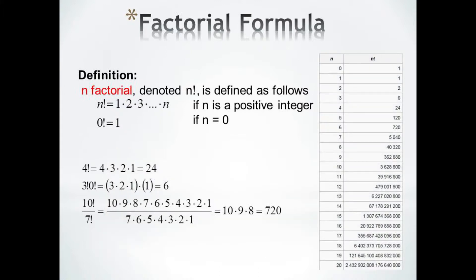You can see here some examples using factorials. 4 factorial equals 4 times 3 times 2 times 1, which is 24.